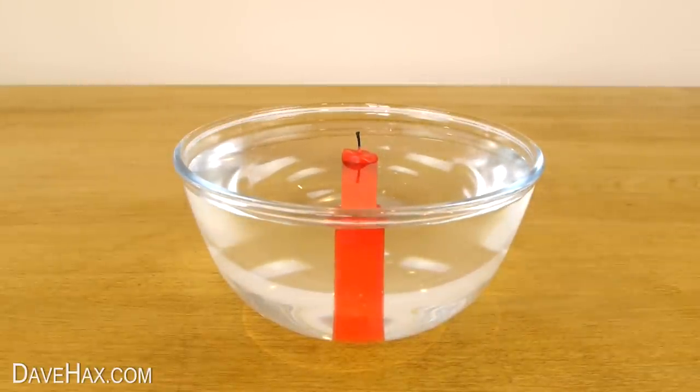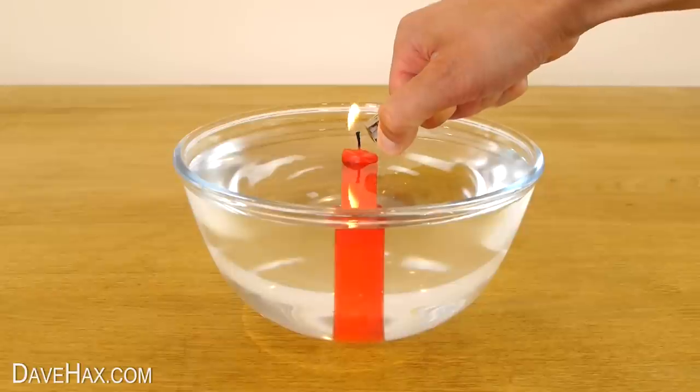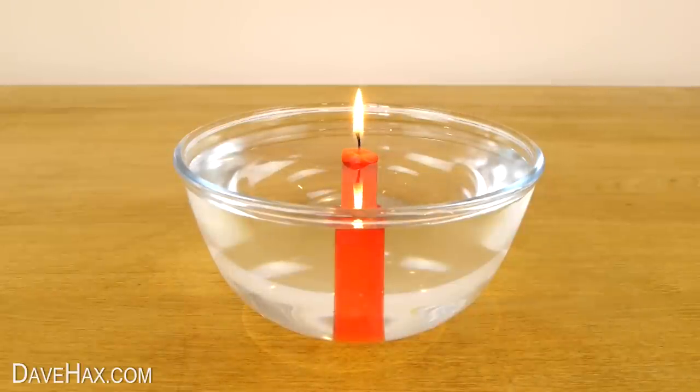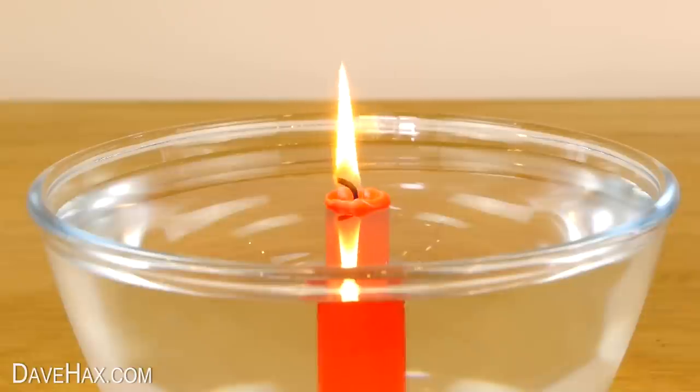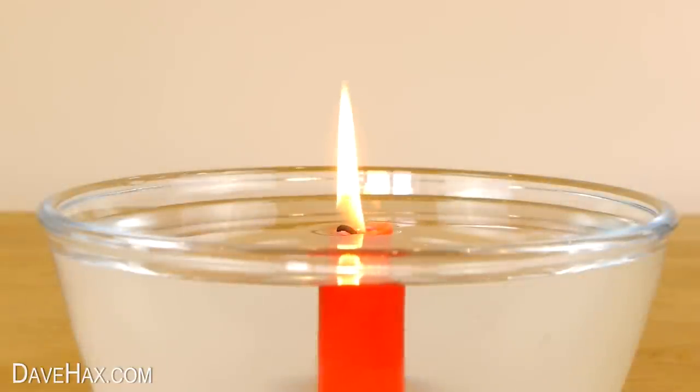When the water settled, go ahead and light the candle. I'm speeding up the video so you can see what happens. As the wax burns, the water keeps the outside of the candle cold so it doesn't melt, and the flame actually starts to drop below the surface of the water.